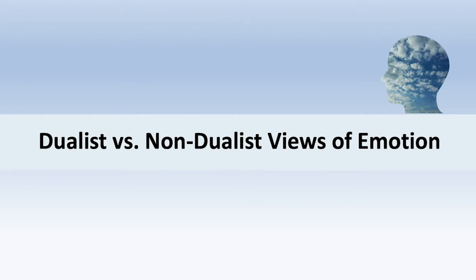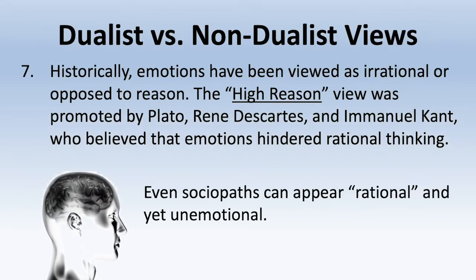Let's talk about the dualistic or non-dualistic views of emotion. Historically, emotions have been viewed as irrational or opposed to reason — the high reason view, meaning that reason is more intellectual. This view is promoted by Plato, Rene Descartes, and Immanuel Kant, who believed emotions hindered rational thinking. Interestingly, even sociopaths can appear rational and yet unemotional — people who can kill in cold blood without any emotions. This goes against the idea that emotions are necessarily the bad thing; maybe you need to be more in tune with emotions sometimes.